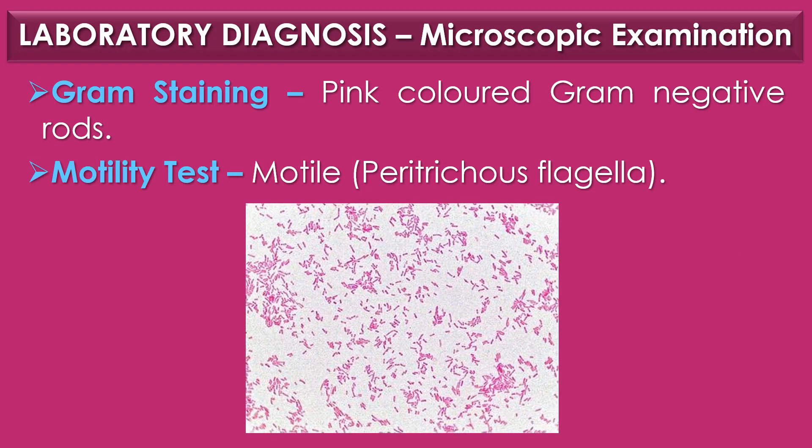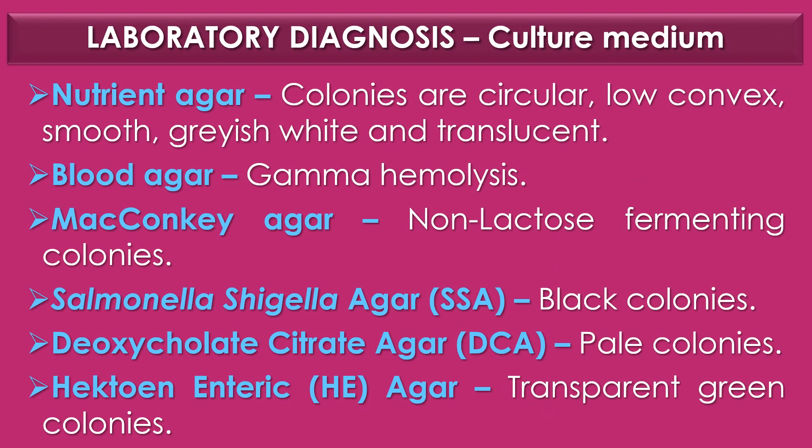Regarding laboratory diagnosis of Salmonella species, the first diagnostic method is microscopic examination. Under gram staining, Salmonella species appears as pink-colored gram-negative rods, and in motility tests, cells are actively motile due to peritrichous flagella. On nutrient agar, colonies are circular, low-convex, smooth, grayish-white, and translucent. On blood agar, Salmonella exhibits gamma hemolysis. On MacConkey agar, non-lactose-fermenting colonies are observed.